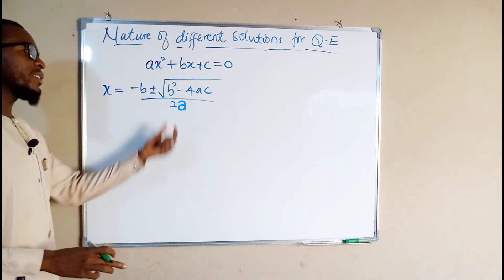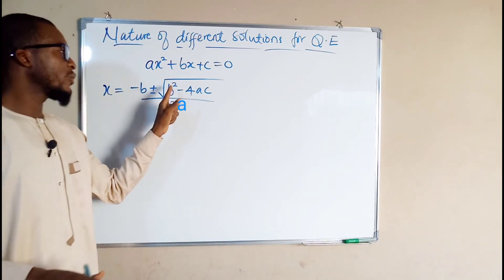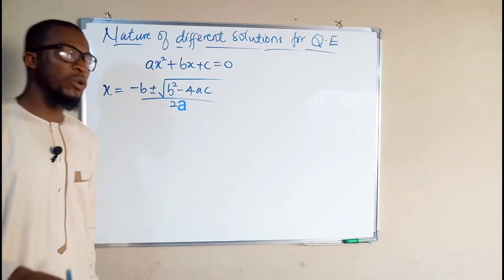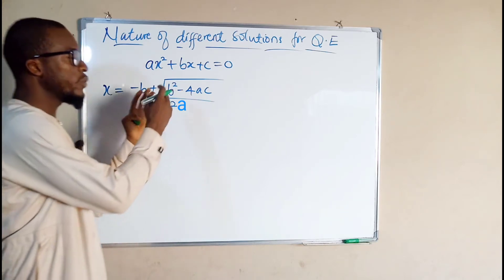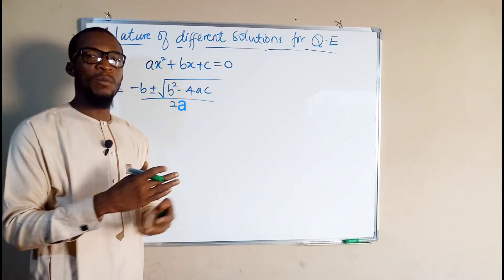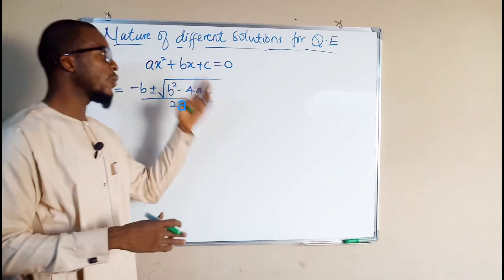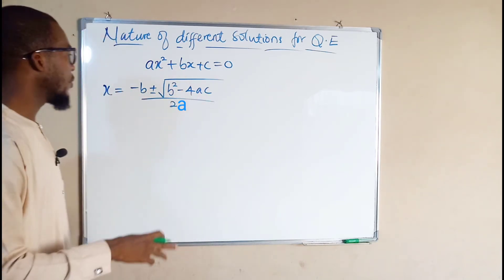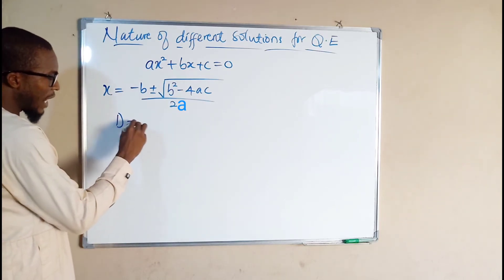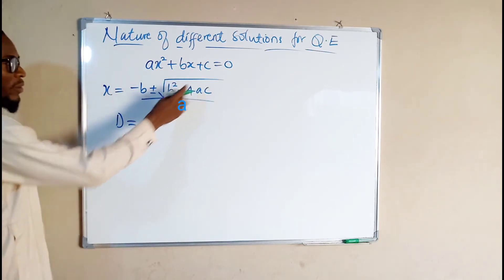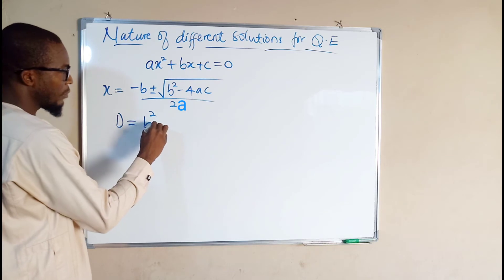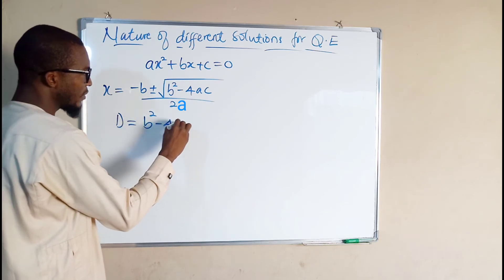So the terms under this square root are very, very important because we use them to determine the different forms of solutions for quadratic equations. So suppose d equals these terms under the square root, which is b squared minus 4ac.